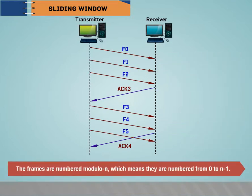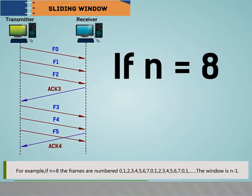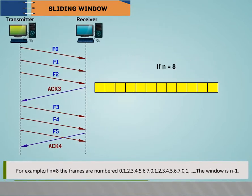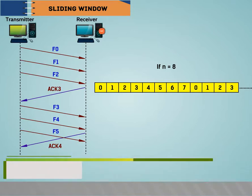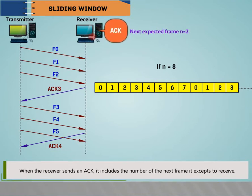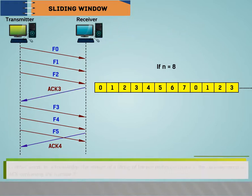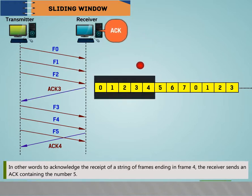To track which frames have been transmitted and received, sliding window uses an identification scheme based on window size. Frames are numbered modulo n (from 0 to n-1). For example, if n = 8, frames are numbered 0, 1, 2, 3, 4, 5, 6, 7, 0, 1, 2... and so on. The window size is n-1. When the receiver sends an acknowledgement, it includes the number of the next frame it expects to receive. For example, to acknowledge frames ending in frame 4, the receiver sends an acknowledgement containing the number 5.